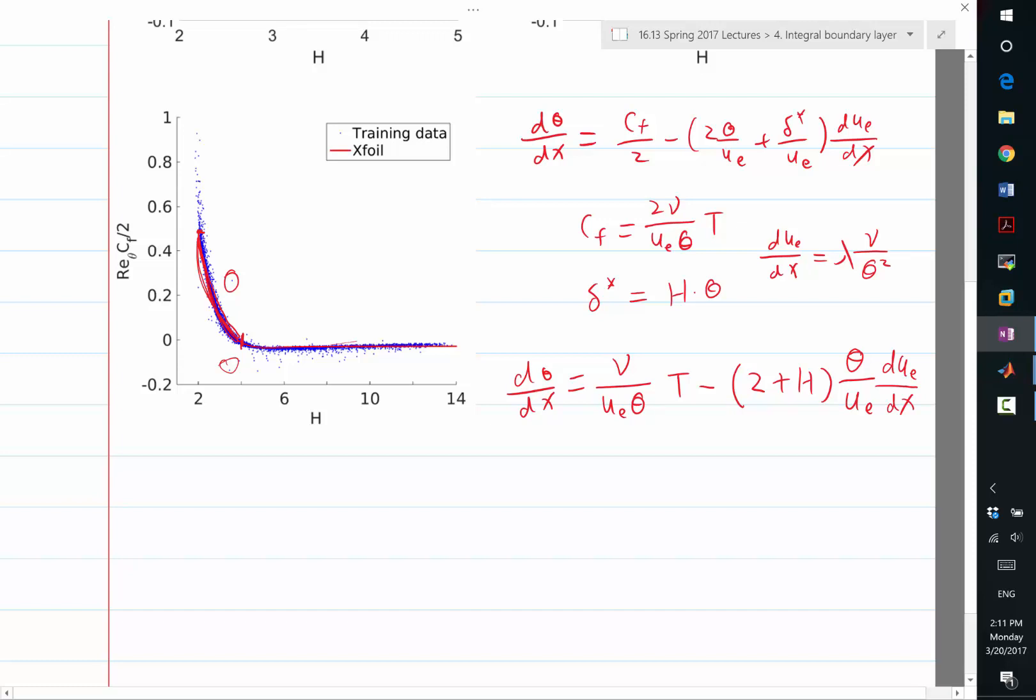And d ue dx is equal to lambda times, I think, theta, sorry. So, lambda, so nu over theta squared, sorry. Nu over theta squared. Okay. Now, plug that into here. I will just erase things. So, the theta squared is going to cancel with the theta. I get 1 over theta here, and I get nu lambda here, right? Did I make any mistakes? If no, then, this is basically nu ue theta t minus 2 plus h times lambda, right?